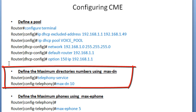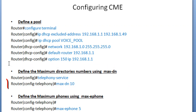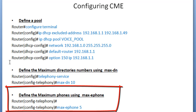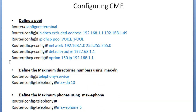After that, we're going to define the maximum directory numbers using the telephony-service command with maxdn. In this example I put 10 — I advise you to choose more directories than you need in case your network grows. You also have to define the maximum number of ephones, and make sure you don't choose a number bigger than what you are authorized to use on your CME router.